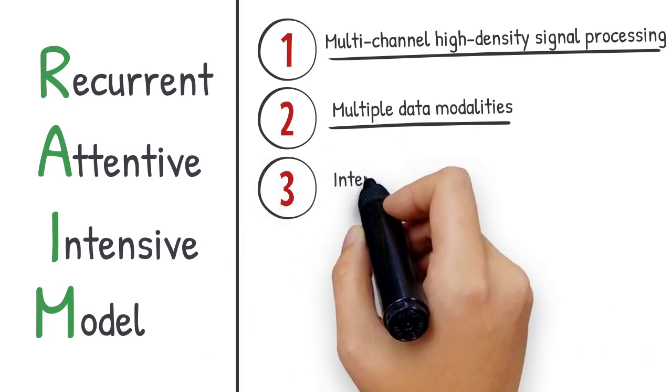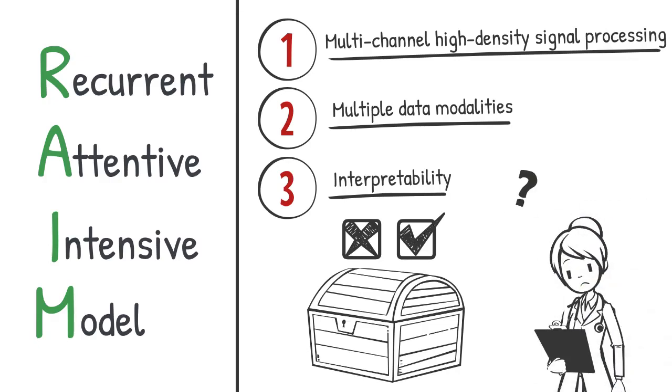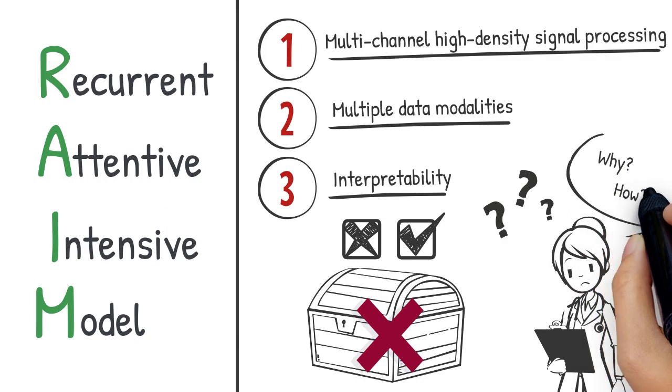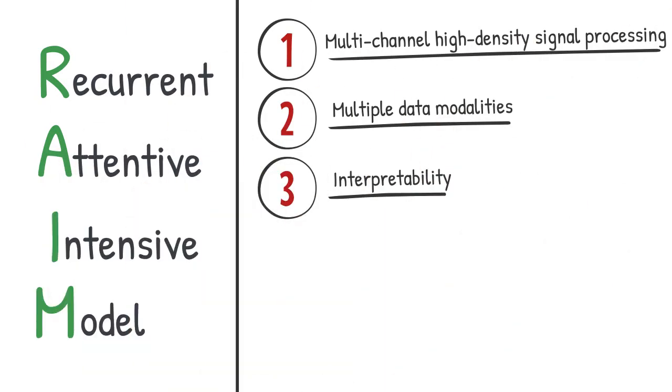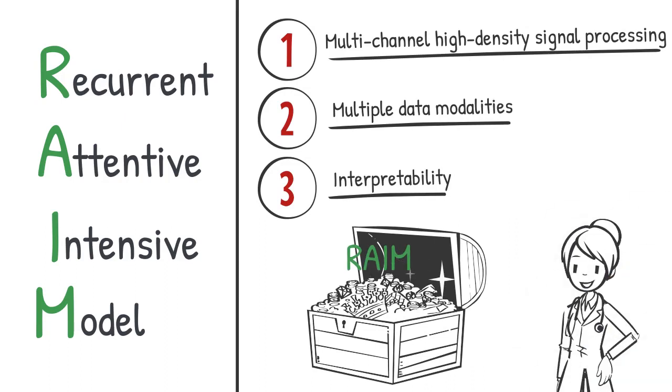Lastly but not least, interpretability. Deep learning models are usually treated as black boxes when making predictions. But it is extremely hard for doctors to believe a result without knowing why and how it was produced. So in REM, we open the box and tell what input factors are mostly influencing the predictions.